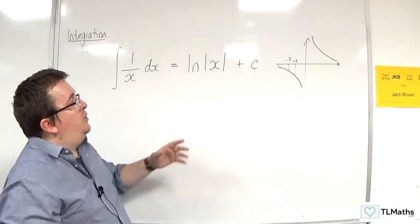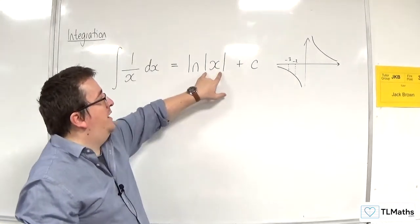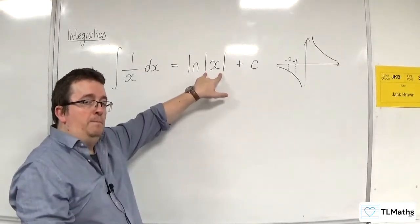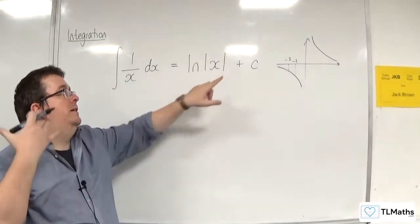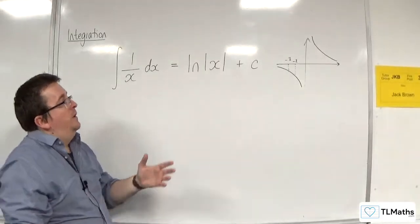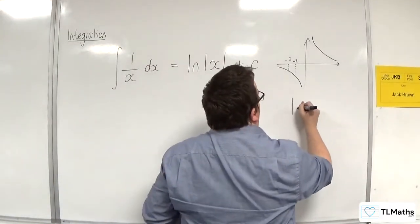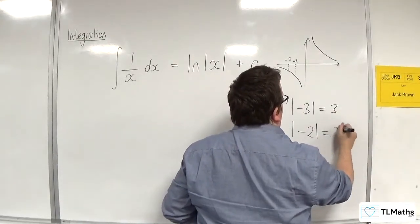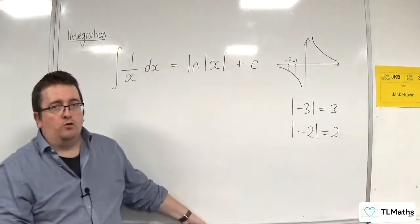Whereas if we substitute in minus 3 and we take the modulus of that, that makes the minus 3 positive 3. So these modulus signs take the absolute value. So when you substitute them in, you'll have the modulus of minus 3, which is 3, the modulus of minus 2, which is 2, and then you can evaluate your logarithm.